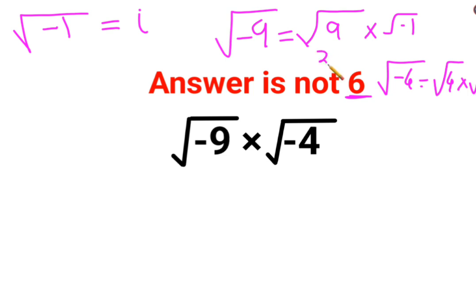So root of 9 is 3, root of negative 1 is i. This is becoming 3i. Here also, root of 4 is 2, root of negative 1 is just i. So basically you are getting 3i multiplied by 2i.